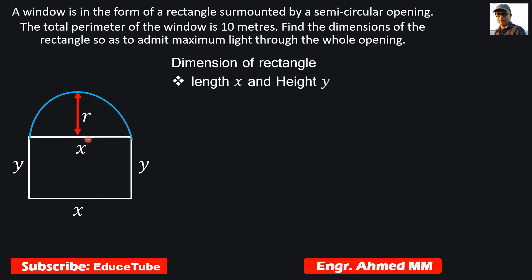Let's start by considering the length and height of the rectangle as x and y, and the radius of the semicircle will be x by 2, half of this length. So I'm writing here radius equal to x by 2.